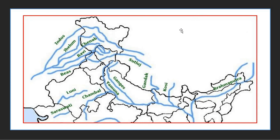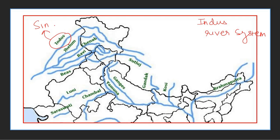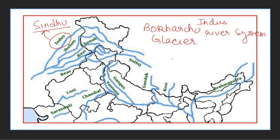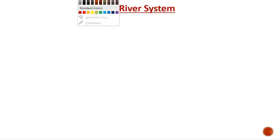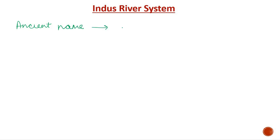Let us start with the first river system, which is known as the Indus river system. The Indus is known as Sindhu — that is its ancient name. The origination of this river is near Mansarovar in the Bokarchu glacier. In Tibet, it is known as Singhi Khamban, which can also be called Lion's Mouth.